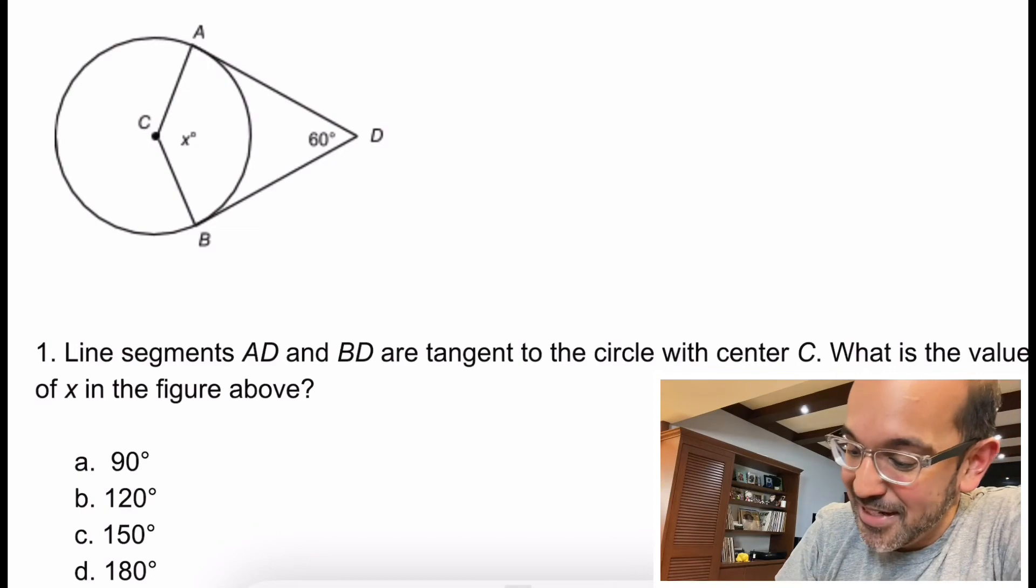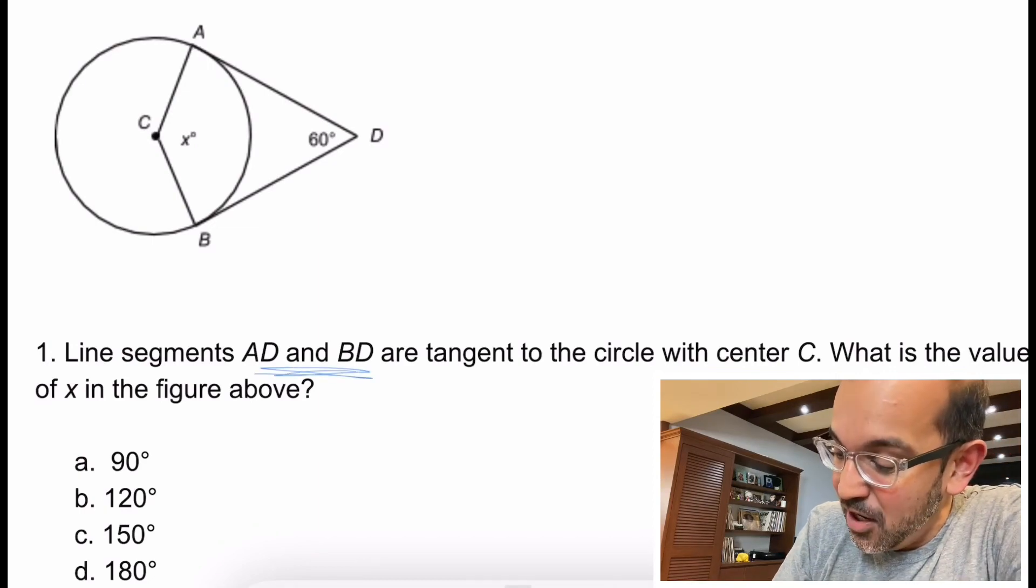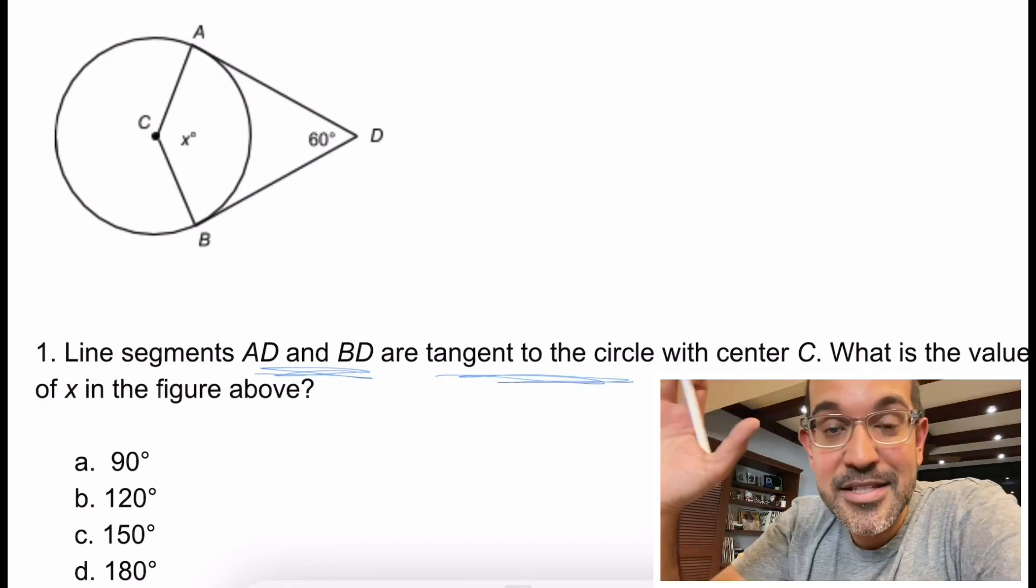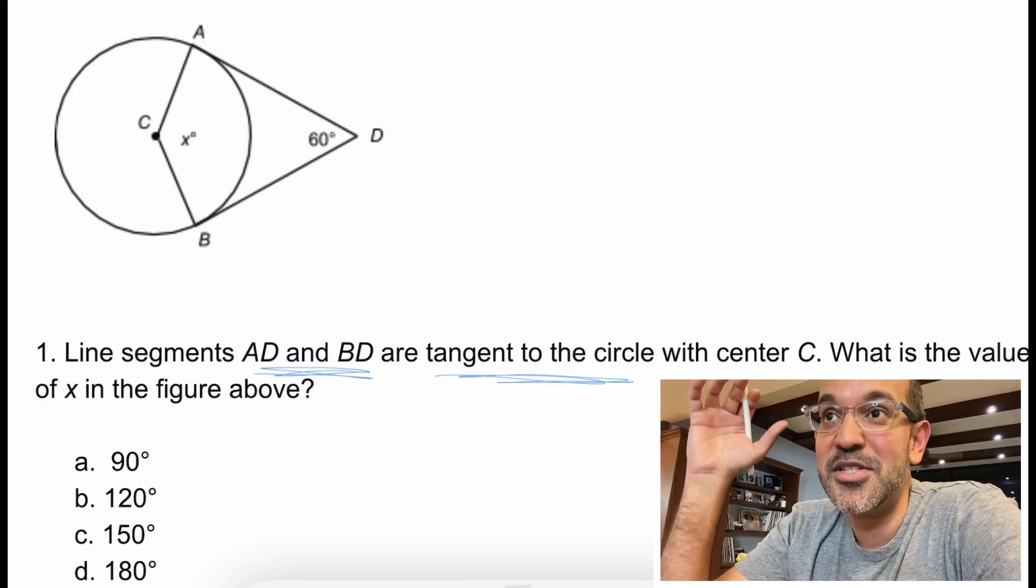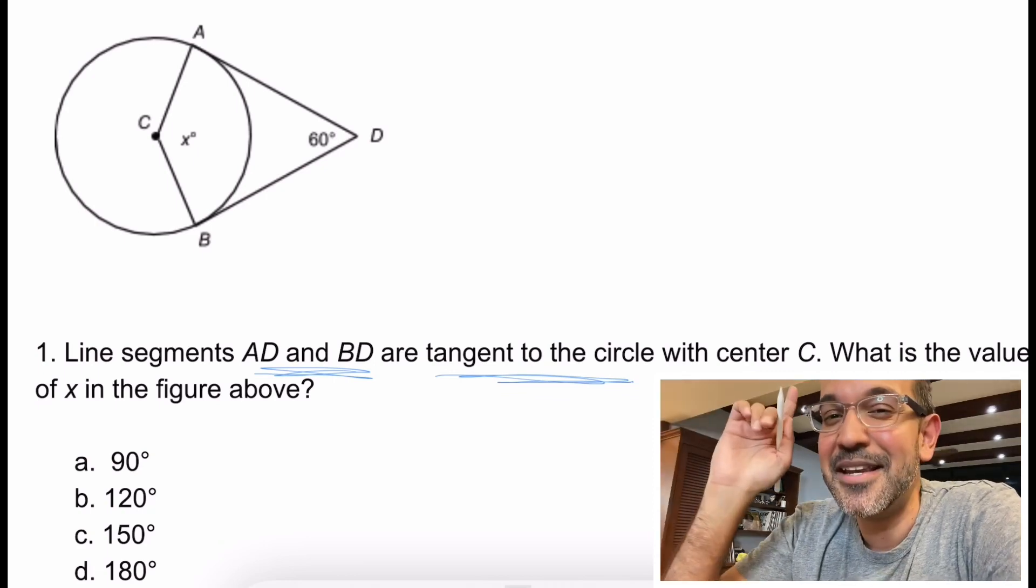Today we're going to be working on questions that deal with angles and tangent and the circle. So let's get into it. Here we have line segments AD and BD are tangent to the circle. Let's just stop there because this is something that used to confuse the heck out of me and it doesn't need to be confusing.